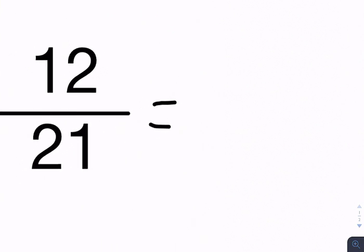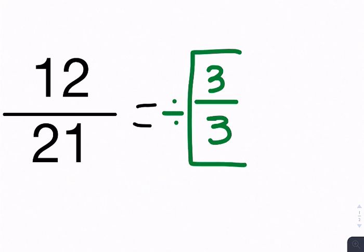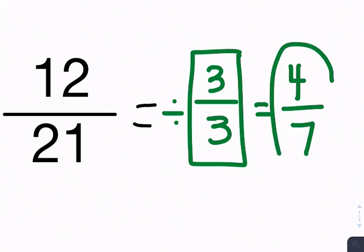Example number 3. We have 12 over 21, 12/21. So a number that goes into both 12 and 21. Let's see. 3 times 4 is 12. And 3 times 7 is 21. So 3 over 3. 12 divided by 3 is 4. 21 divided by 3 is 7. So 4/7.